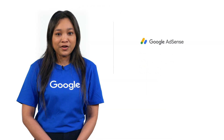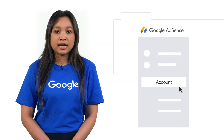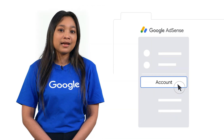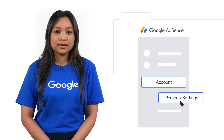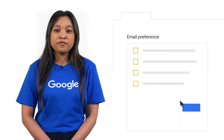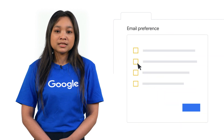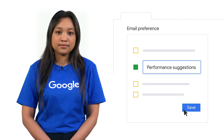It's easy to sign up to receive performance suggestions. Here's how. First, sign into your AdSense account and click Account. Then, open Personal Settings. In the Email Preference section, select Performance Suggestions and click Save.